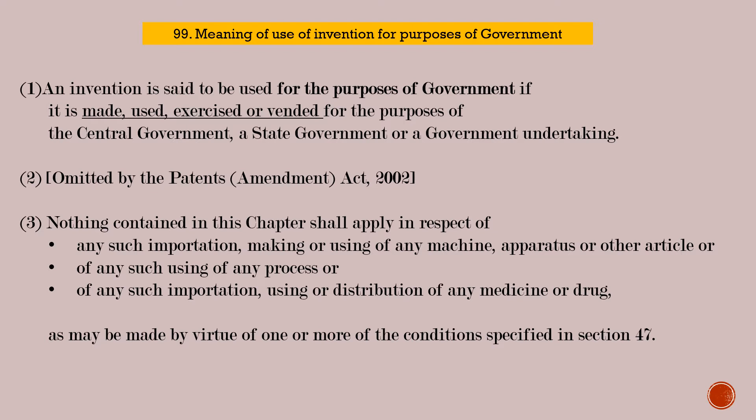Subsection 3: Nothing contained in this chapter shall apply in respect of any such importation, making, or using of any machine, apparatus or other article, or such using of any process, or such importation, using or distribution of medicine or drug as may be made by virtue of one or more of the conditions specified in Section 47. Section 47 deals with the conditions applied in case of grant of a patent. Nothing will be against Section 47 when these factors are considered.